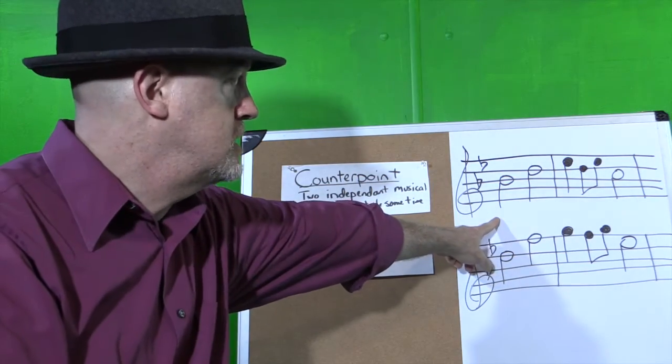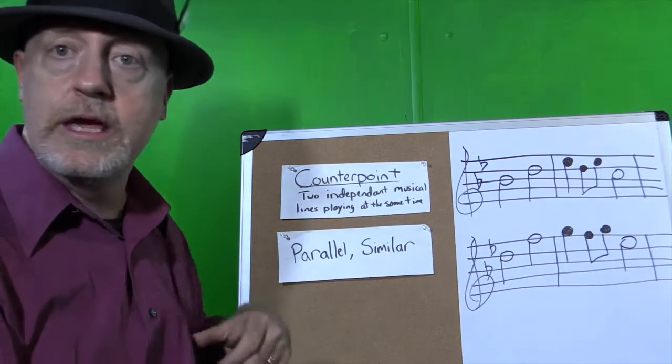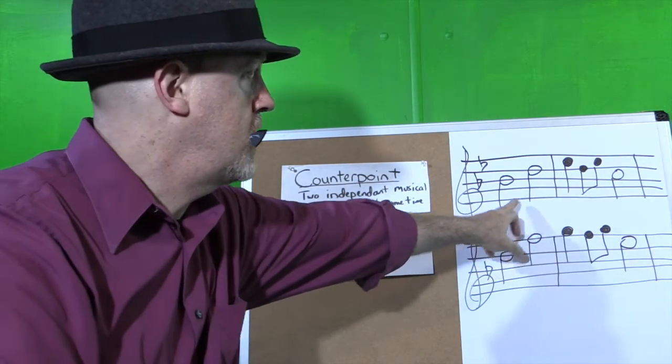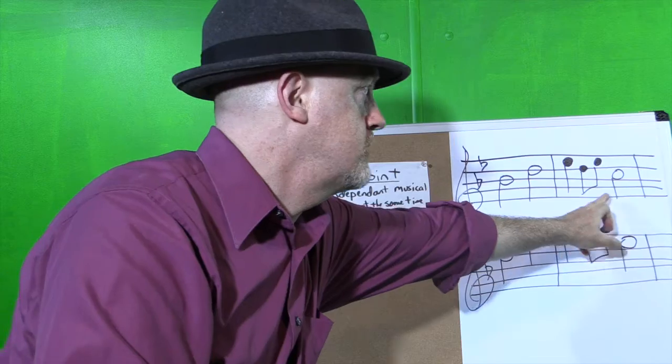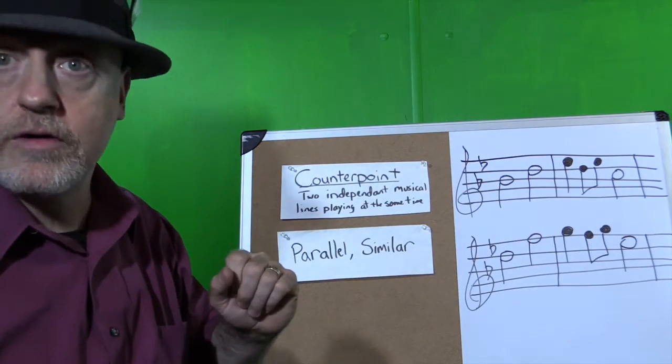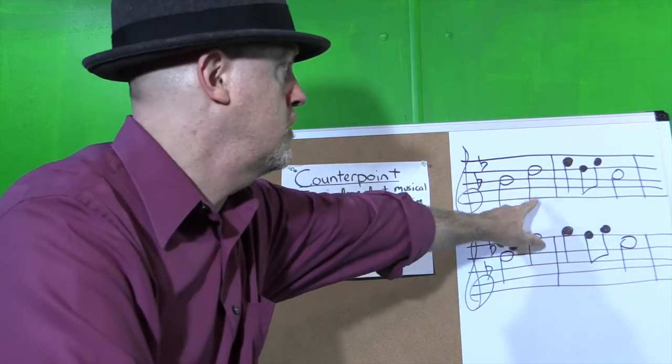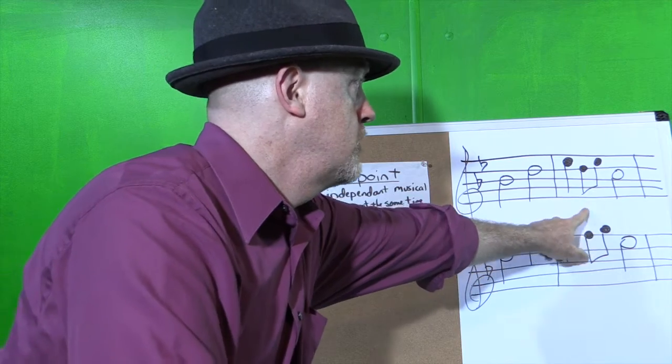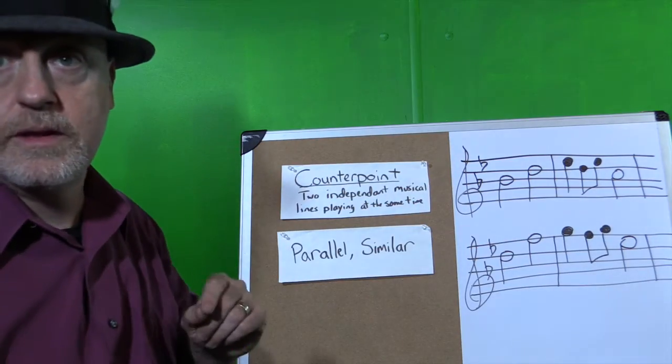So you have in this line, we're in the key of B flat and we have B flat D, E flat D, E flat C. So if we think of our numbers, we have 1, 3, 4, 3, 4, 2. Okay?